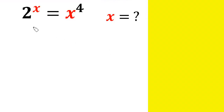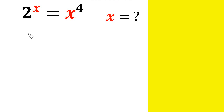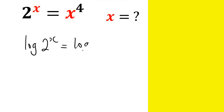Hi everyone, solving this Olympiad question: 2 raised by the power of x equals x raised by the power of 4, and x equals what? Solving an Olympiad question like this — what a lot of people, the majority of people, are going to do is to apply log to both sides, that is the natural log: log of 2 raised by the power of x equals log of x raised by the power of 4.